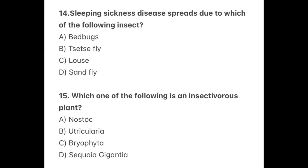Question 14: Sleeping sickness disease is spread by which insect? The correct option is B — tsetse fly. Question 15: Which one of the following is an insectivorous plant? The correct option is B — Utricularia.